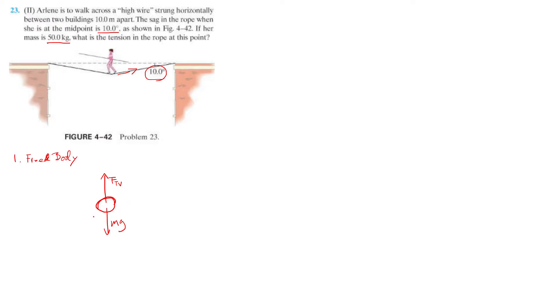And is there any acceleration at this point? The answer is zero. So part two, we should use F equals m times a. We should use Newton's second law. And we know that F net is equal to FTV minus mg is equal to m times zero, right? There's no acceleration. She is still.